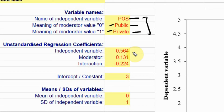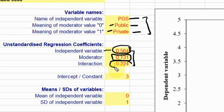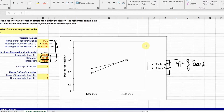You enter the data here — the path coefficients, that is the impact of the independent variable on your dependent variable, the impact of the moderator on the dependent variable, and the interaction effect. Once these effects are added, you will have this graph.